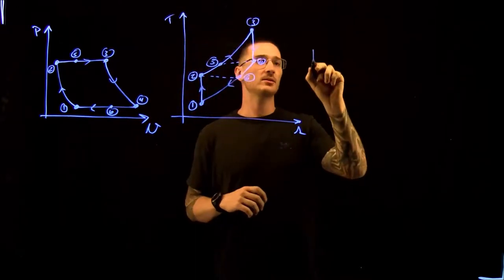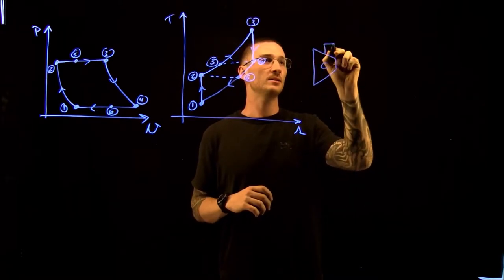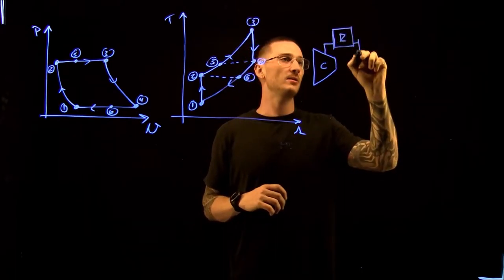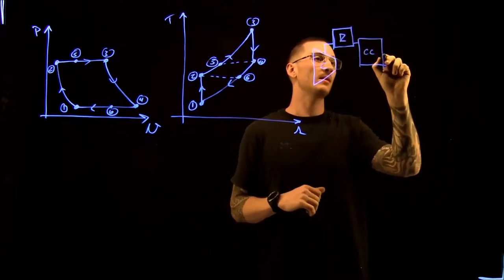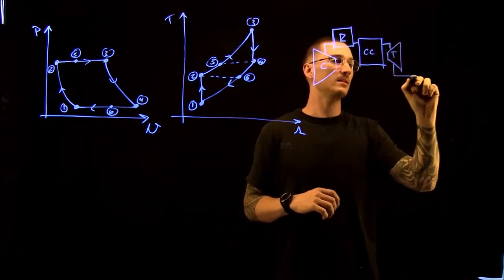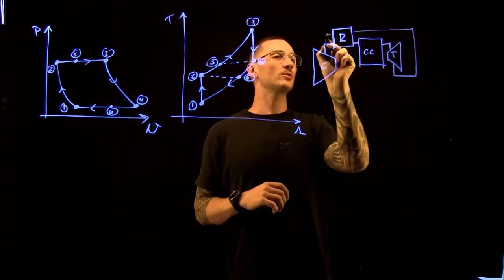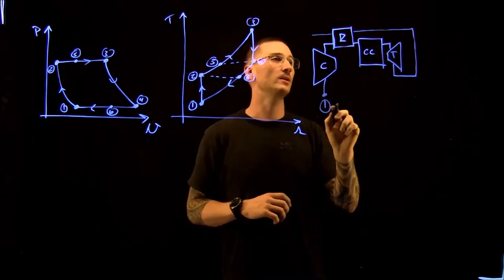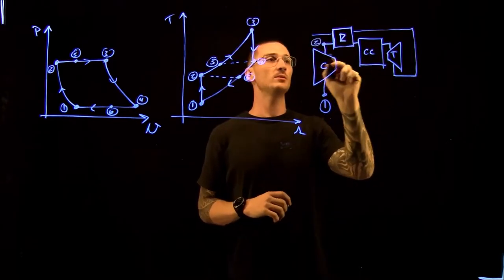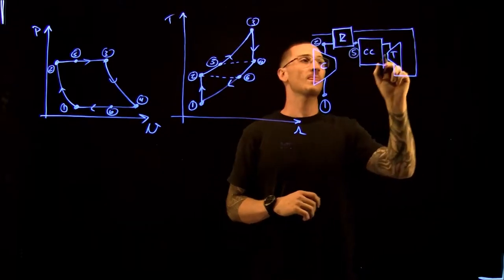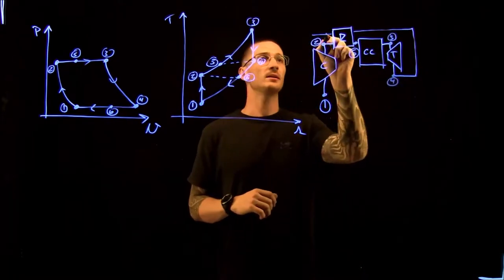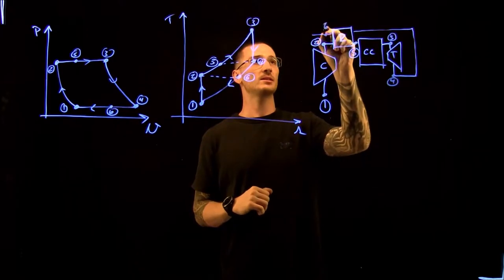Drawing it out, we have our compressor, then before going into our combustion chamber we go into our regenerator. Then we go through the turbine. At the exit of the turbine, we also pass through the regenerator. So point 1 is before the compressor, point 2 is right before the regenerator, point 5 is after the regenerator and before the combustion chamber, point 3 is right before the turbine, point 4 is right after the turbine, and point 6 is at the exit of the regenerator.